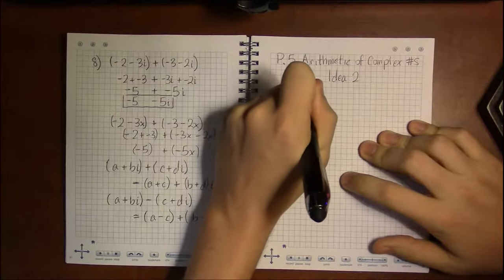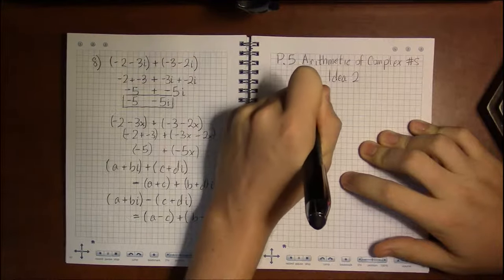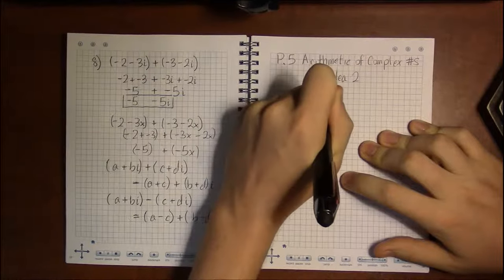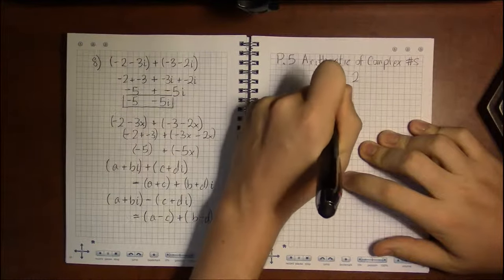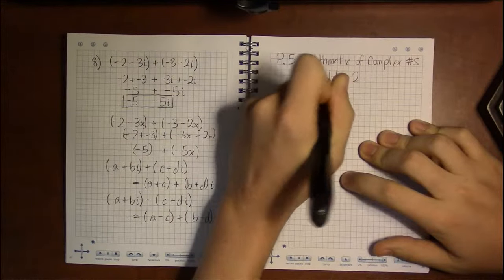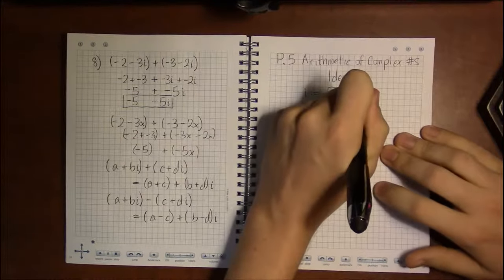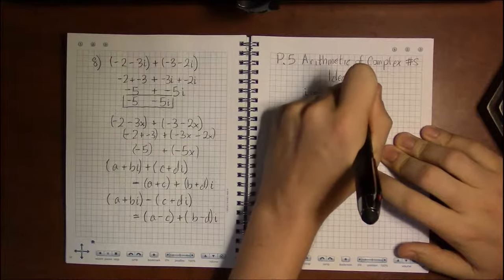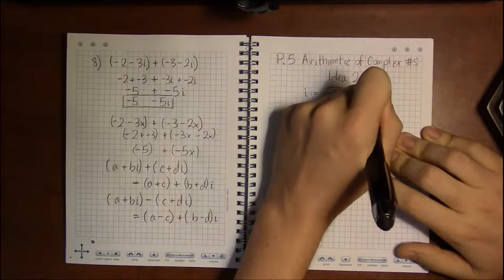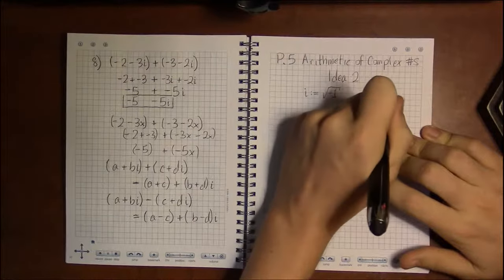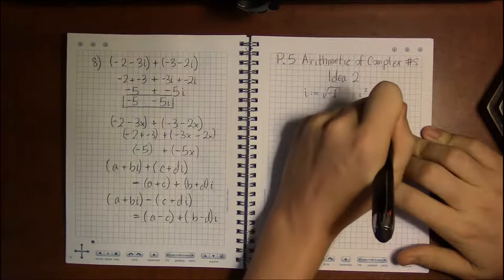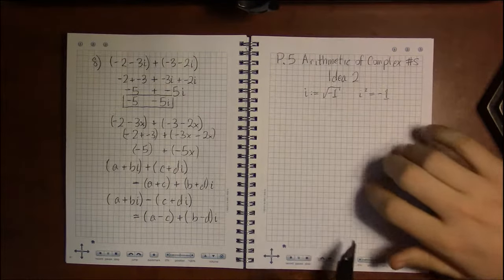Now, I'm going to kind of belabor this point, I know I've already talked about it in all the previous complex videos, but we're defining i to be the square root of negative 1, or in other words, we're saying that i is a number such that when you square it, when you look at i squared, that's equal to minus 1.